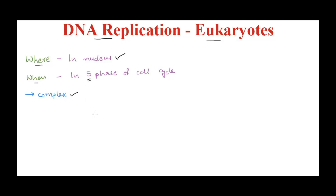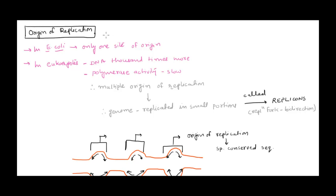Eukaryotic DNA is much more complex compared to prokaryotic DNA — it is maybe a thousand times more than that of prokaryotic DNA. DNA replication starts at a specific site; it cannot start haphazardly anywhere in the genome. There has to be a specific origin of replication where proteins can come, bind, and start replication. In E. coli there was only one origin of replication called oriC, but in eukaryotes the DNA is very large, so having only one origin would take a really long time to replicate the whole genome.